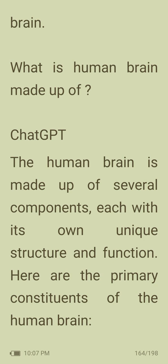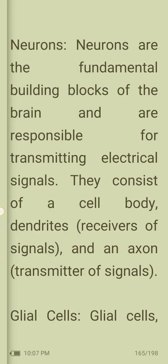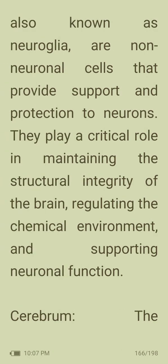The human brain is made up of several components. Neurons are the fundamental building blocks of the brain and are responsible for transmitting electrical signals. They consist of a cell body, dendrites (receivers of signals), and an axon (transmitter of signals). Glial cells, also known as neuroglia, are non-neuronal cells that provide support and protection to neurons. They play a critical role in maintaining the structural integrity of the brain, regulating the chemical environment, and supporting neuronal function.